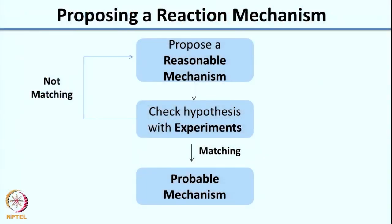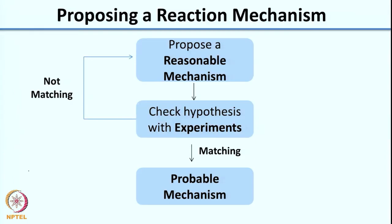Once you do the experiment, you check whether the result matches your hypothesis — whoever reaches faster had the correct hypothesis. If your hypothesis matches the experiment, you can say this is the most probable mechanism. If it does not match, you go back, propose a new reaction mechanism, and check again with experiments. This is a continuous cycle: you start with a mechanism, check the hypothesis, and keep repeating until you get a good mechanism.